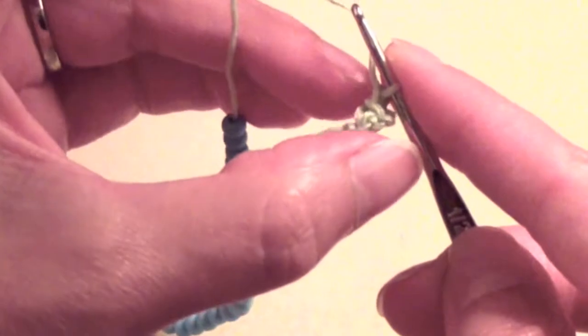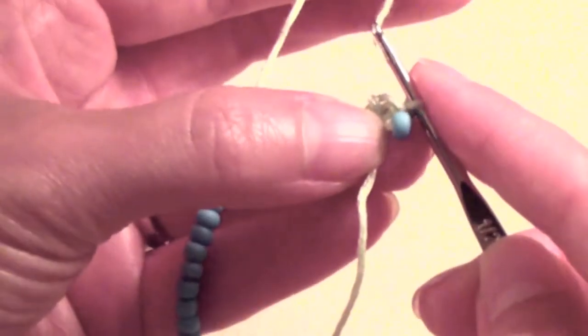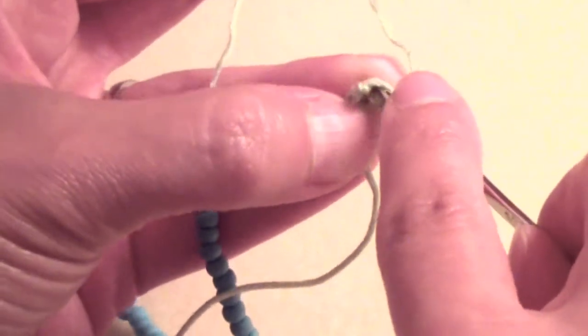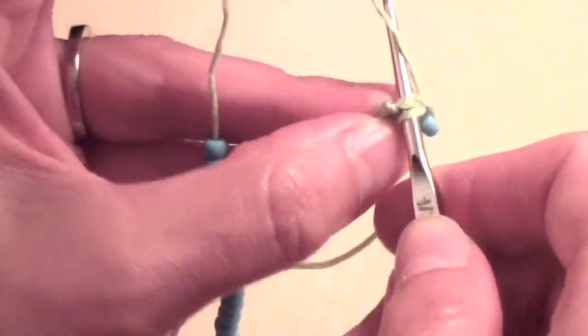Then flip the work over and make a single crochet stitch into the top of the previously made single crochet stitch.